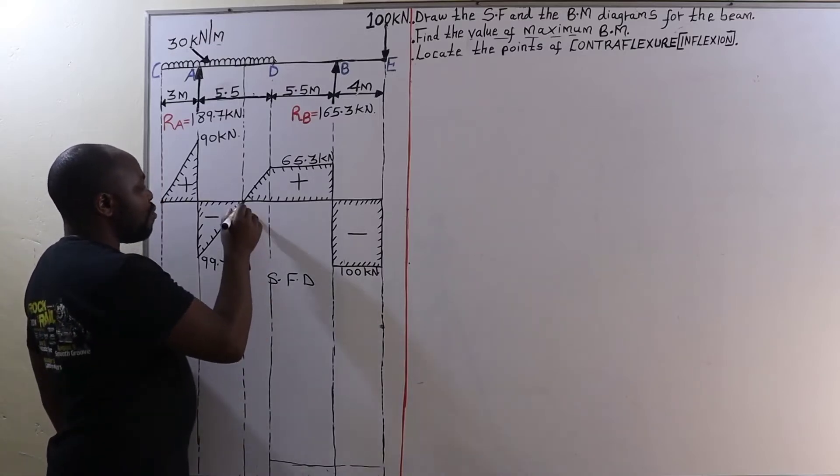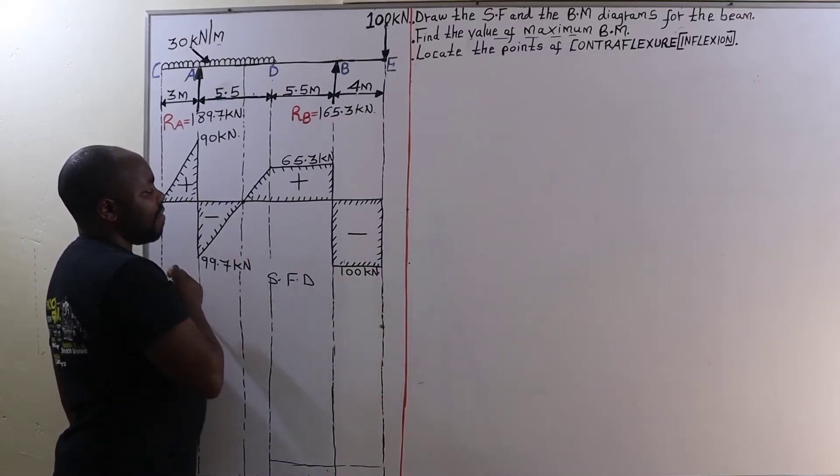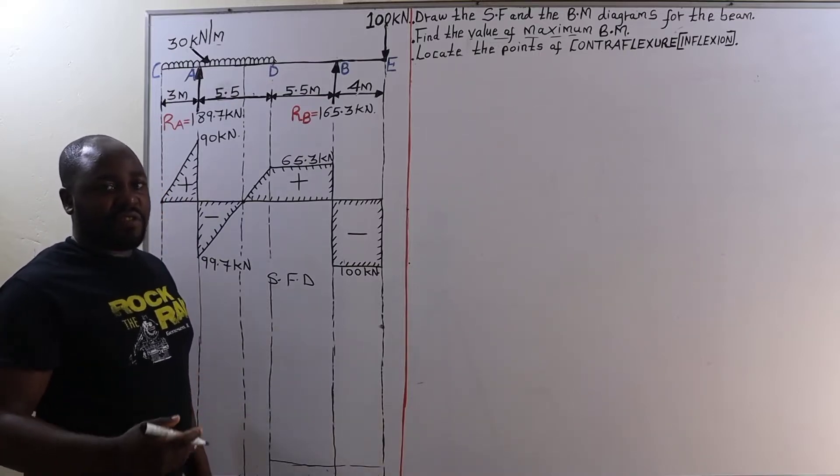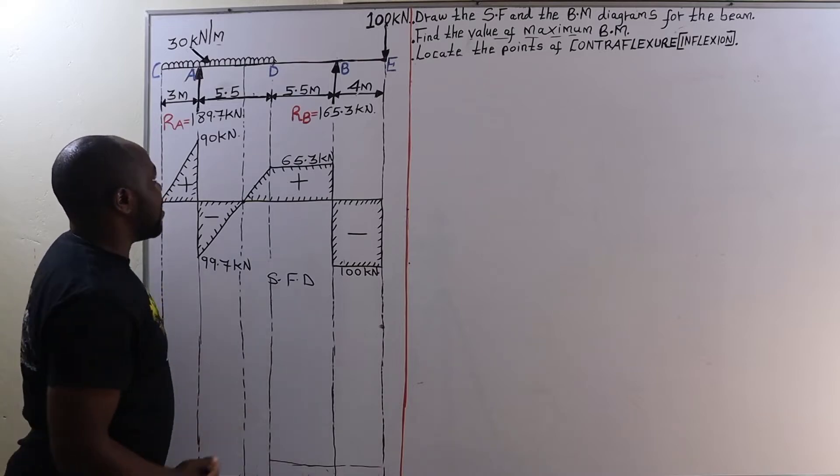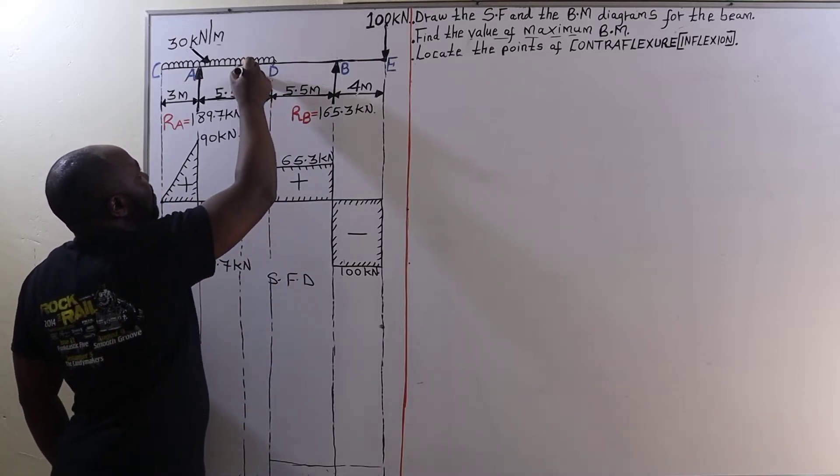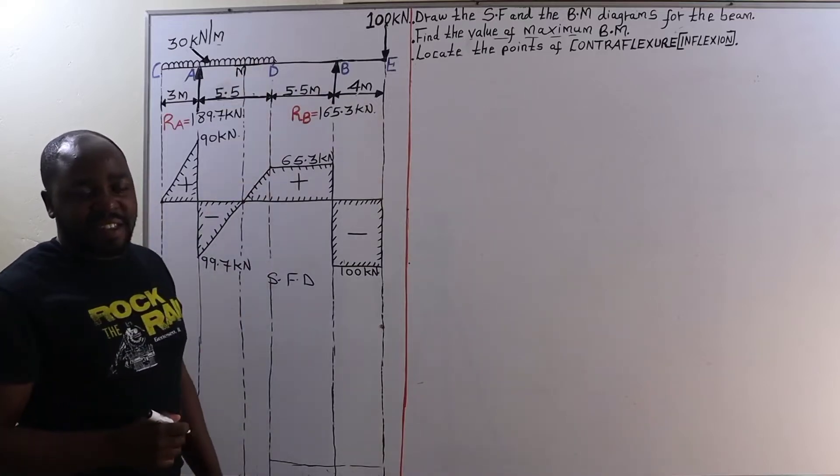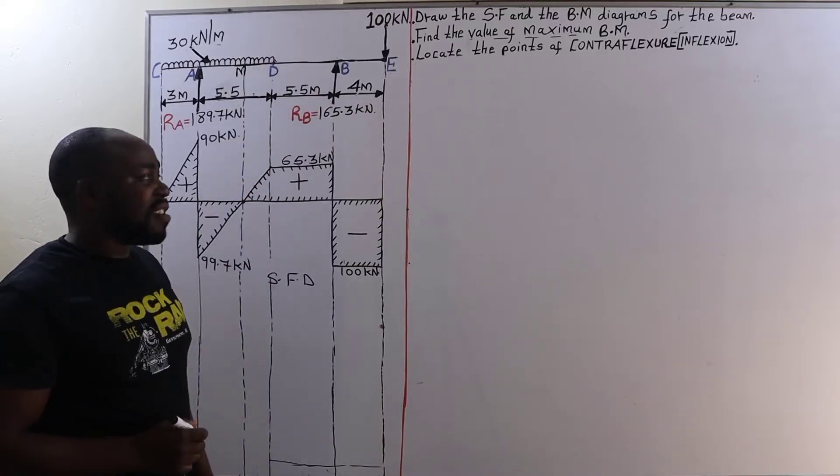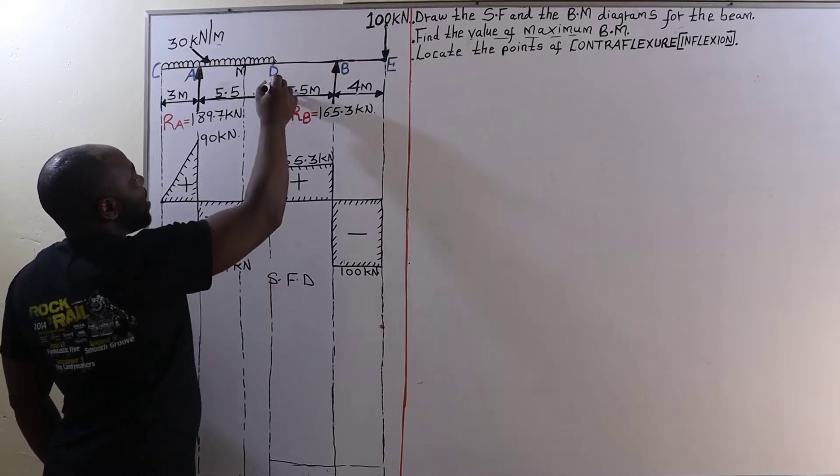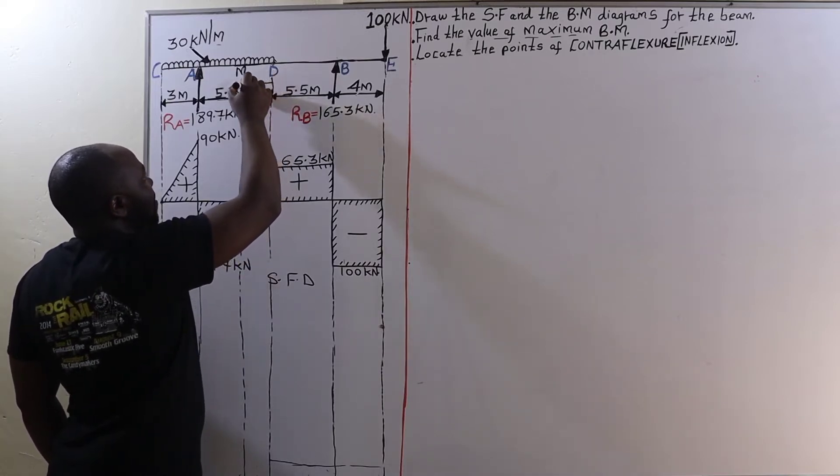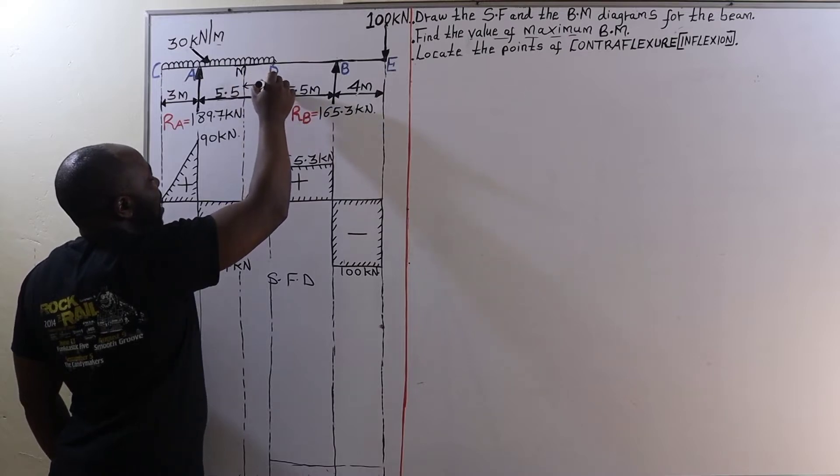Now how do we locate the position of zero shear force, or how do we locate the position of maximum bending moment? Therefore, if we call this point M, meaning the maximum bending moment, we are going to determine the distance from point D all the way to point M.